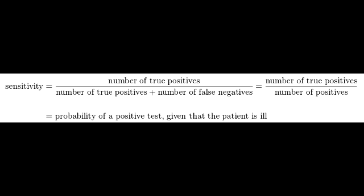What is the equation of sensitivity? The equation of sensitivity is TP over TP plus FN — true positive over true positive plus false negative. Also, the equation of sensitivity equals 1 minus the false negative rate.